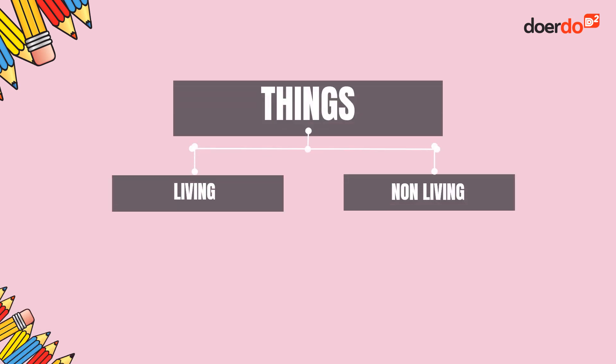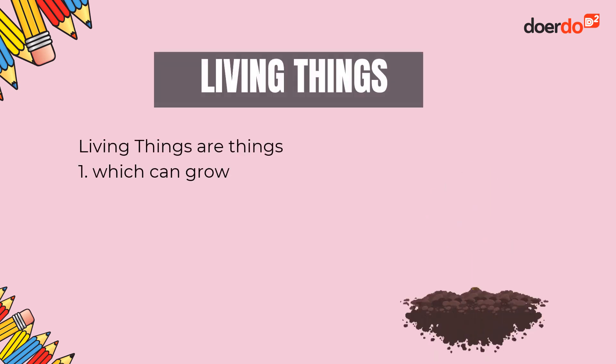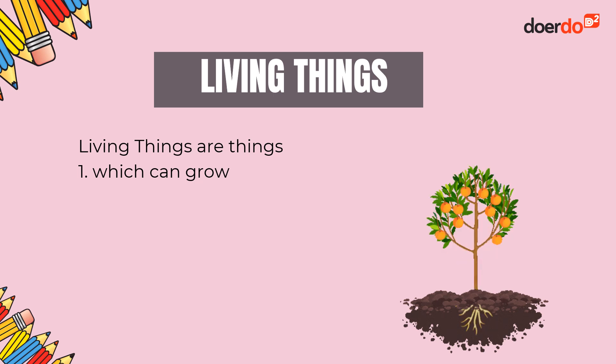So for living and non-living things, how do we classify or group them? How do we tell the difference? We'll be going through the different properties and characteristics of living things, so it's very important to take note of them.